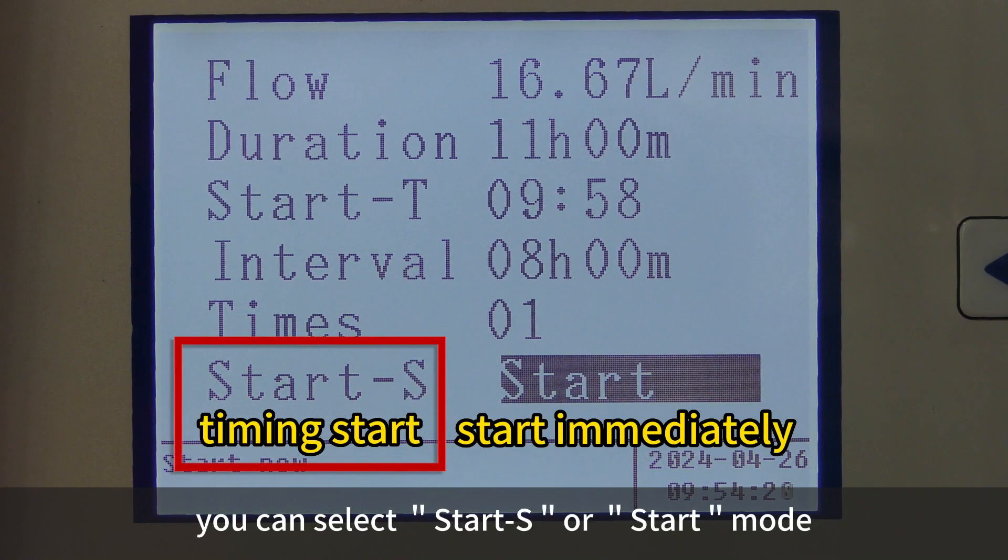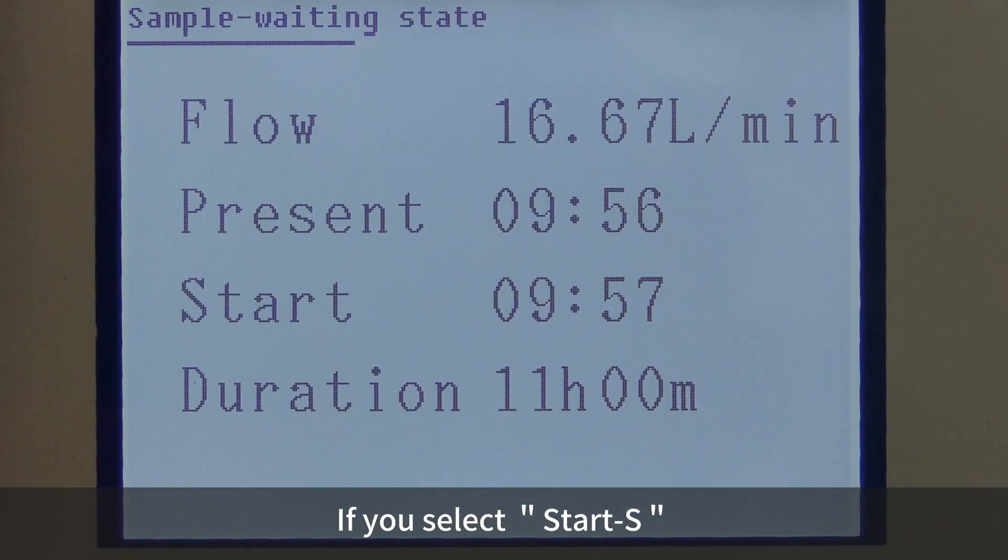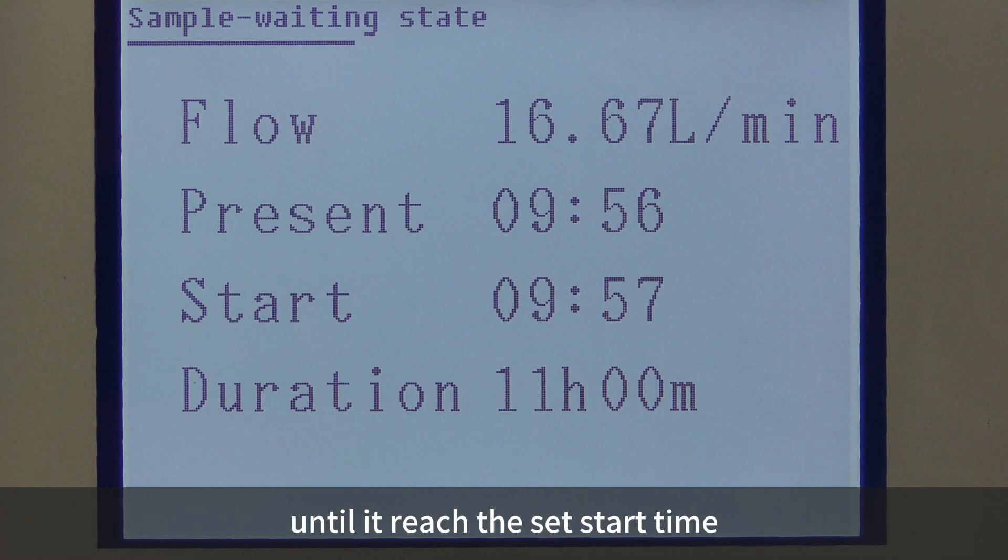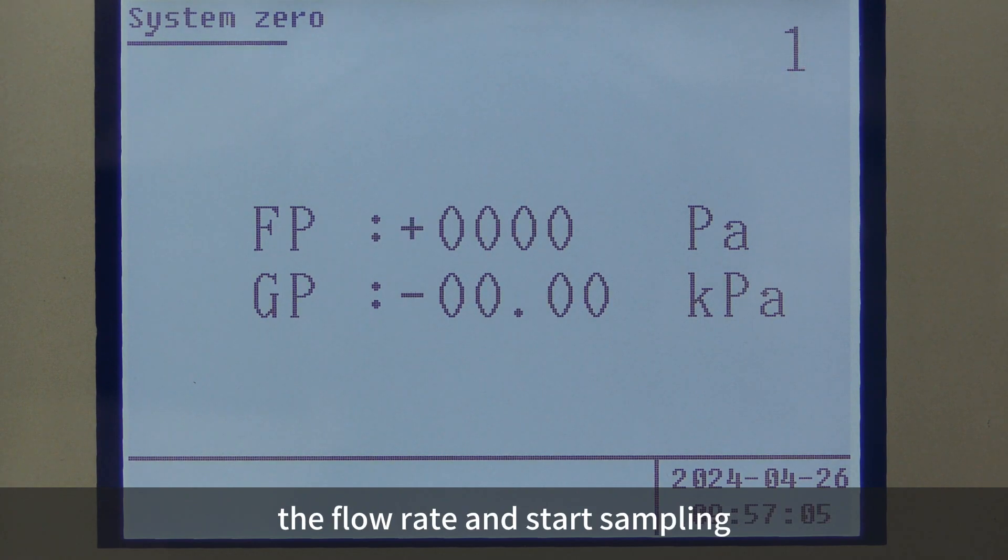If you select Start S, the sampler will start to count down until it reaches the set start time. The instrument will then automatically zero the flow rate and start sampling.